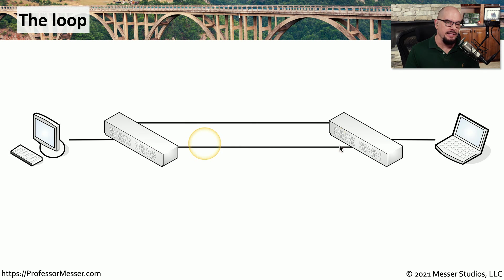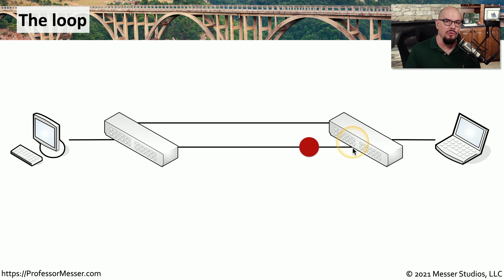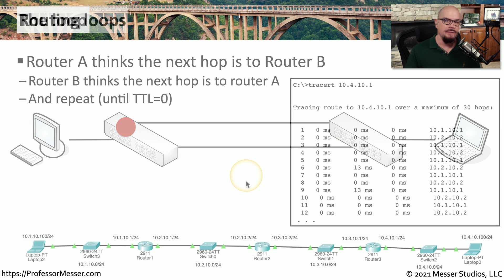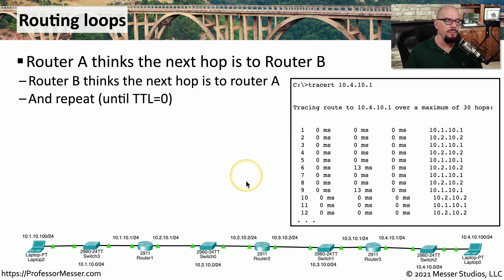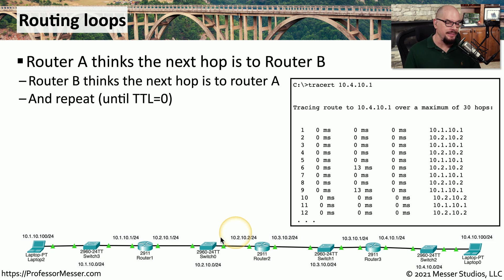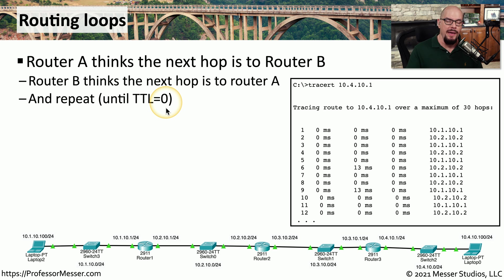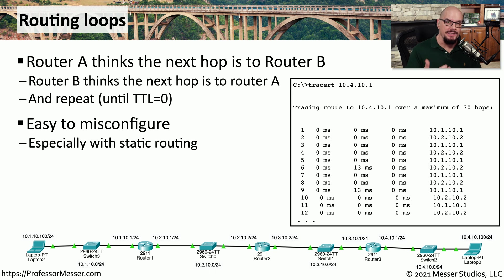If we introduce traffic into a looped network, it will move to one switch, go down the loop, move to the next switch, and begin looping over and over again until we remove that second link. If you're managing a layer 3 routed network, you also have to be aware of routing loops. A routing loop is when one router's configured best next hop points to another router, and that router's best next hop points back to the first — they continue to send information back and forth until the time-to-live equals zero and the packet is discarded.